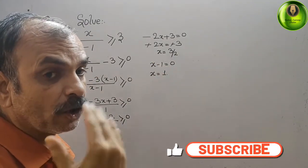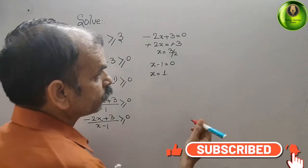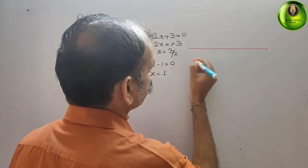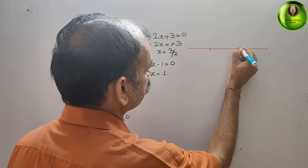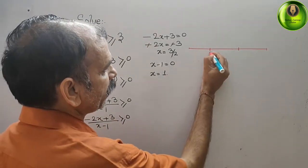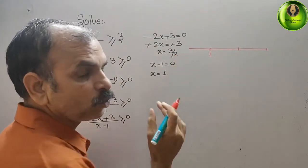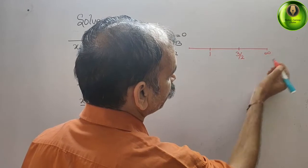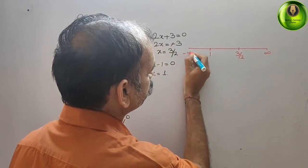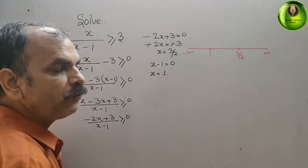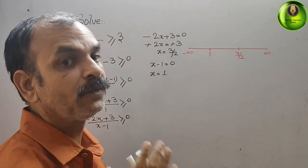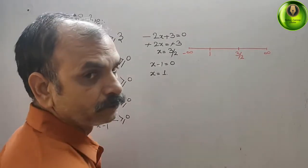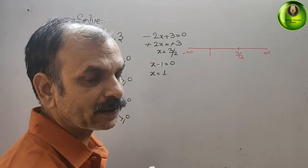Now we represent these on a number line. We have two critical values: 1 on the left and 3/2 (which is 1.5) on the right, with minus infinity on the far left and plus infinity on the far right. This creates three sectors or segments on the number line.